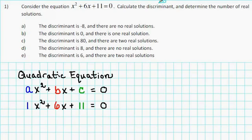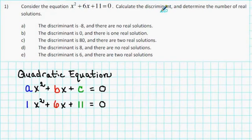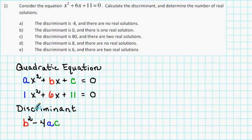To calculate the discriminant, we need to recall that the discriminant is b squared minus 4ac. So to find the discriminant, we'll substitute 6 for b, 1 for a, and 11 for c. When we do, we get 6 squared minus 4 times 1 times 11. 36 minus 44 is negative 8. So the discriminant is negative 8.